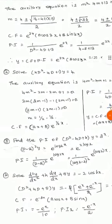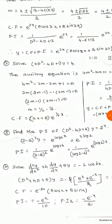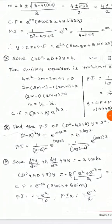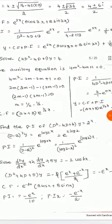The next problem is: (4D² - 4D + 1)y = 4. Here the right-hand side is a constant, not zero. We write the constant as 4·e^(0·x). First we find the complementary function by writing the auxiliary equation: 4m² - 4m + 1 = 0. Factorizing: 4m² - 2m - 2m + 1 = 0, taking 2m as a common factor from the first two terms: 2m(2m - 1)...